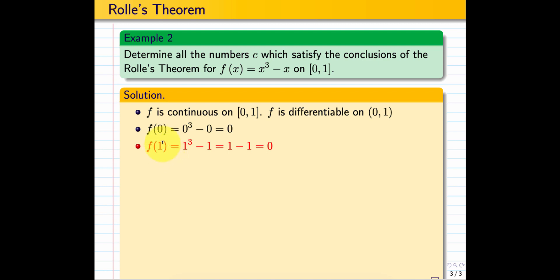f(1), because b is 1, equals 1³ minus 1 equals 1 minus 1 equals 0. Hence, [f(b) minus f(a)] over [b minus a] equals 0 over 1 equals 0.